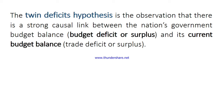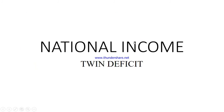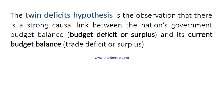Now where we amalgamate — that is, where we connect these two words together — the twin deficit hypothesis is the observation that there is a strong causal link between the nation's government budget balance (which can be a deficit or surplus) and the current account balance. The surplus is the reverse of deficit, that is when your revenue outweighs your expenses. So these are the two key terms we are looking at in terms of twin deficits.